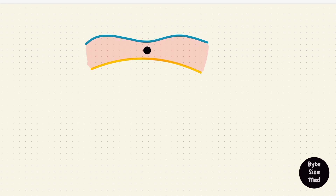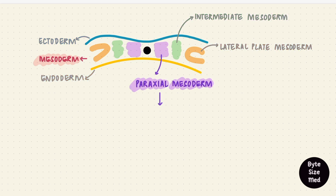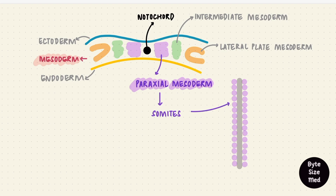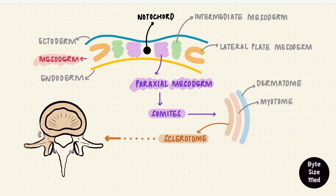Now we know what needs to develop, so we'll go back and see how we get here. We start with the three germ layers — the ectoderm, the mesoderm, and the endoderm — but for this we need the mesoderm. The mesoderm forms three parts: the paraxial mesoderm, the intermediate mesoderm, and the lateral plate mesoderm. The paraxial mesoderm forms structures called somites, which are little segments all along the sides of the notochord. On the dorsal surface of the embryo there are around 44 to 45 somites. Each somite has three parts: the dermatome, the myotome, and the sclerotome. The sclerotomes of the somites are what form the vertebrae.